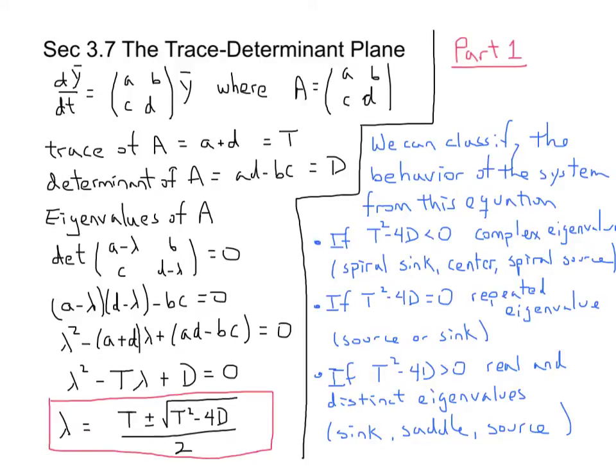The transitional situation is when T²-4D equals 0. Then we just get a single eigenvalue, and that's the case of the repeated eigenvalues. And we know, again, we'll have a source or a sink.